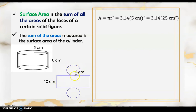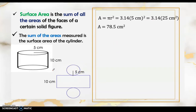First, let's find the area of the circle. The area of a circle is π r². We substitute π as 3.14 and the radius is 5 centimeters; squared, that is 25 square centimeters. 25 times 3.14 gives us the area of this circle, which is 78.5 square centimeters. Since there are two circles in a cylinder with equal measurement, we multiply by 2 to get a total area of 157 square centimeters.